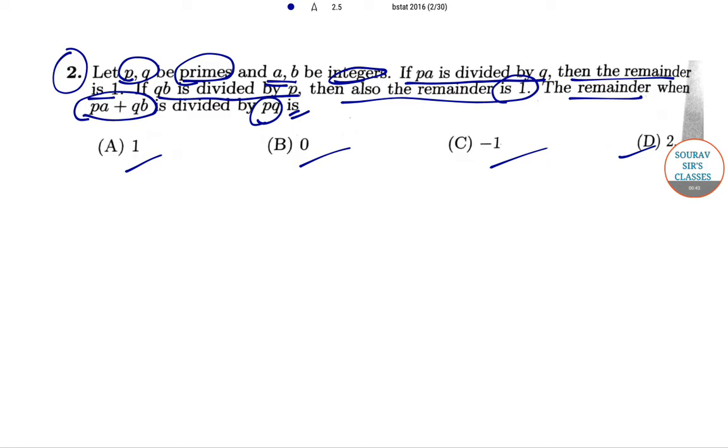So we have been given that when PA is divided by Q the remainder is 1. So we can write that PA is equal to 1 mod Q, and similarly we can write that QB is equal to 1 mod P. These are the statements that we have given.